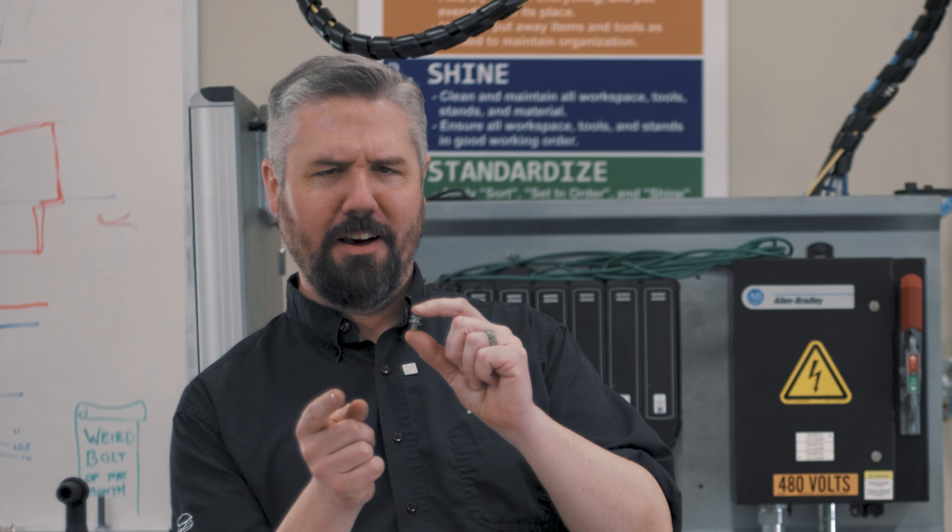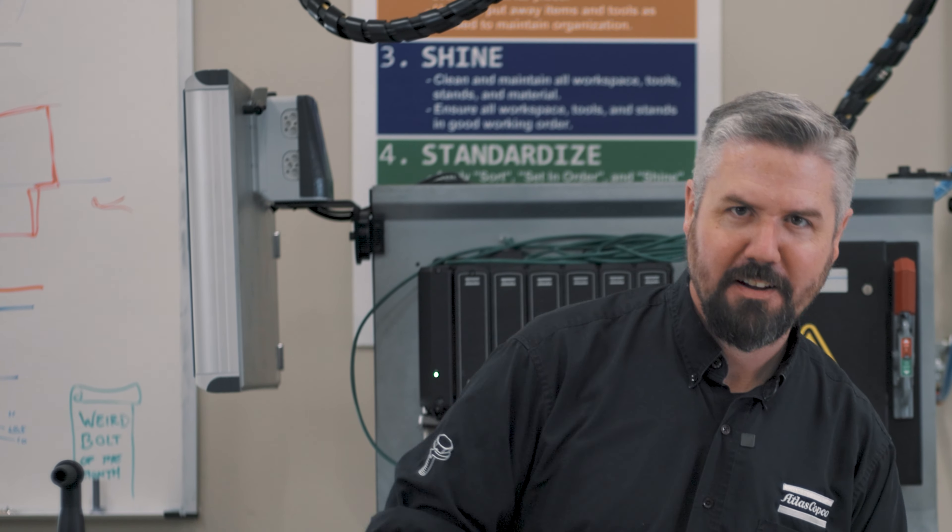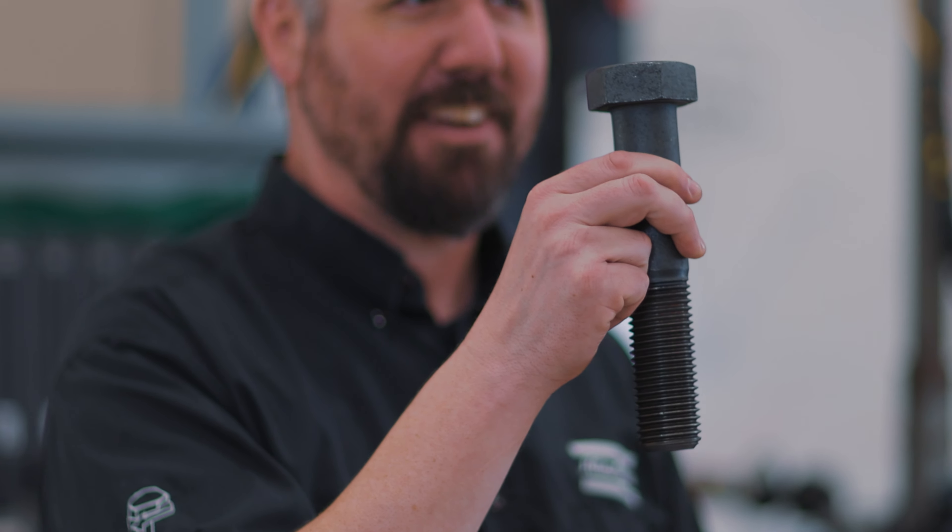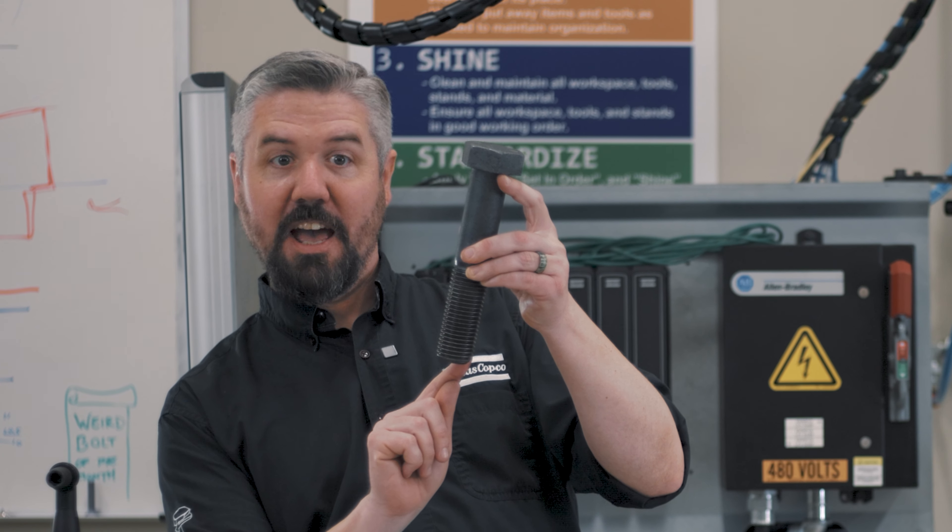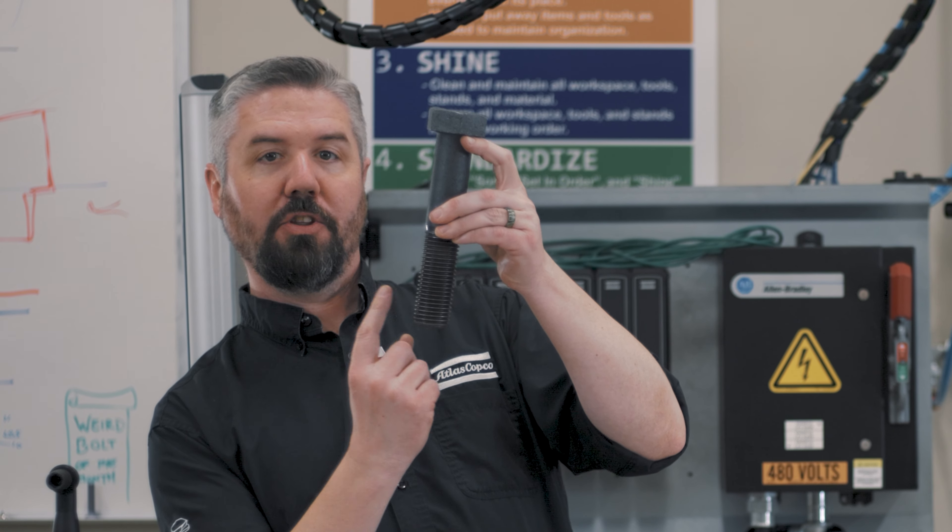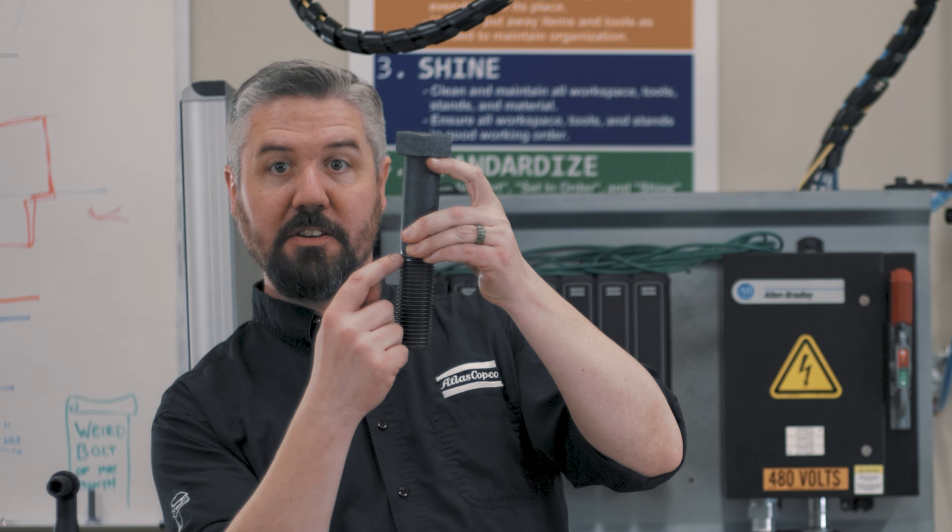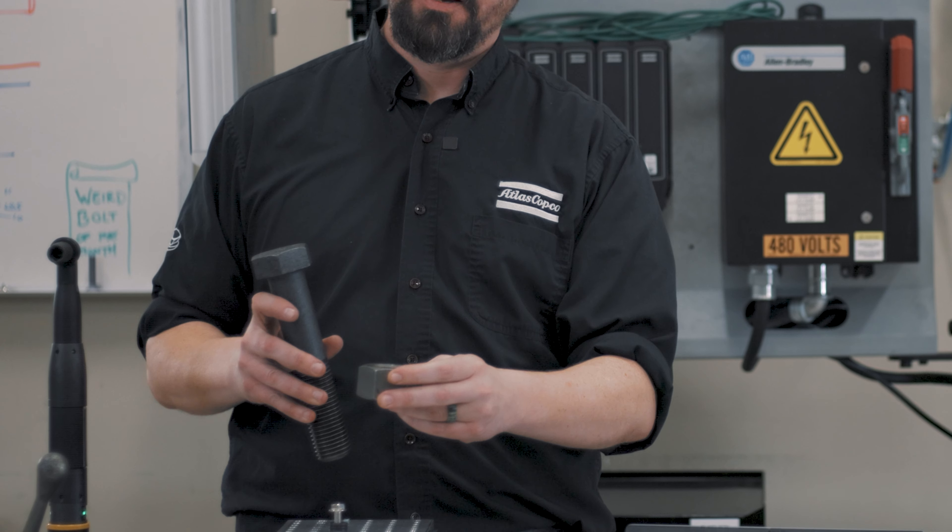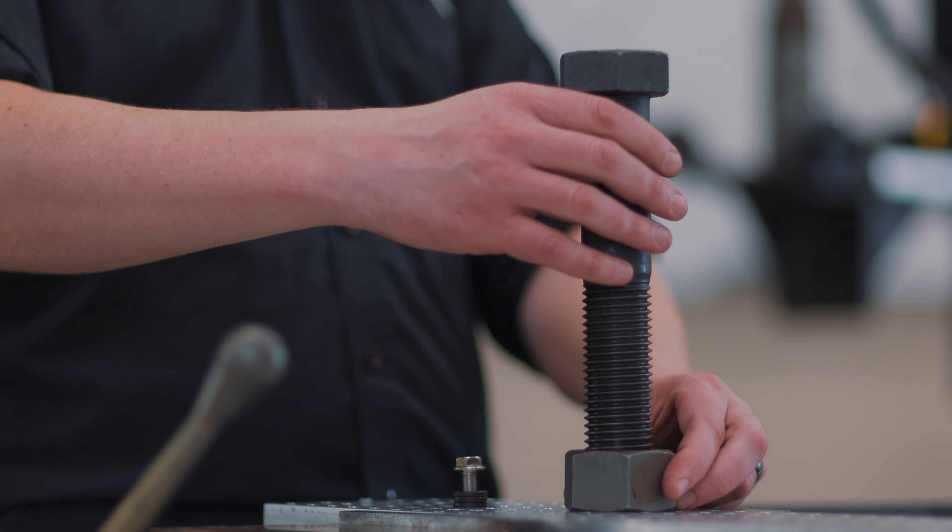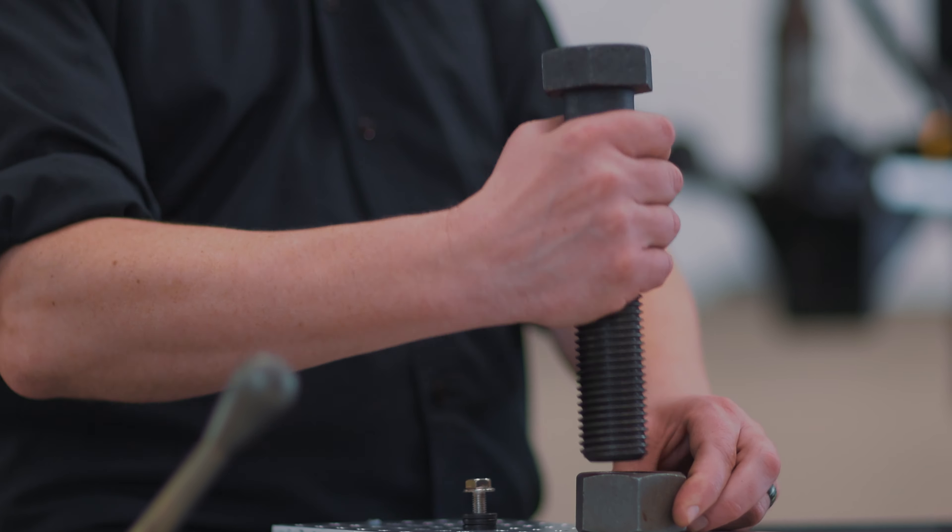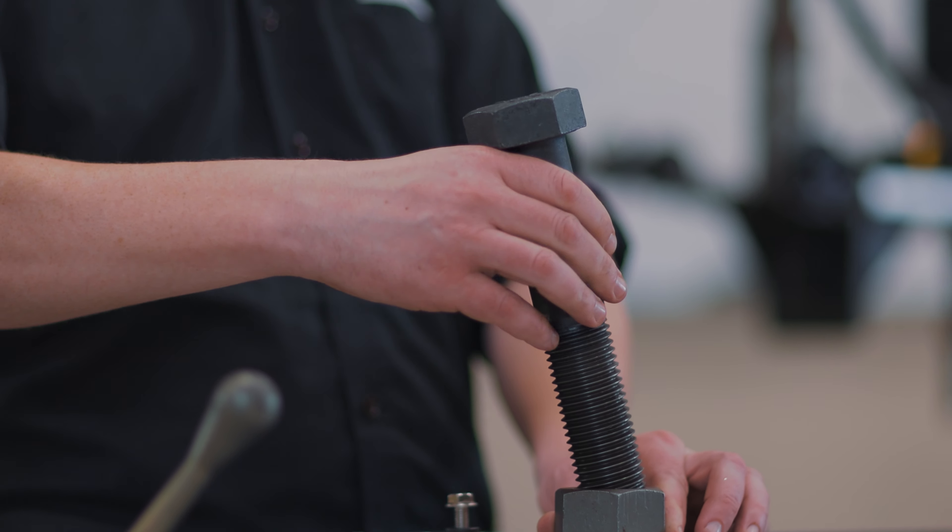All right, so what is a cross thread? This bolt has a single thread that starts at the end of the bolt and climbs all the way up the cylinder to the shank here. The nut, the threaded hole, has a corresponding thread. These normally should line up if the bolt is in line with the threaded hole.